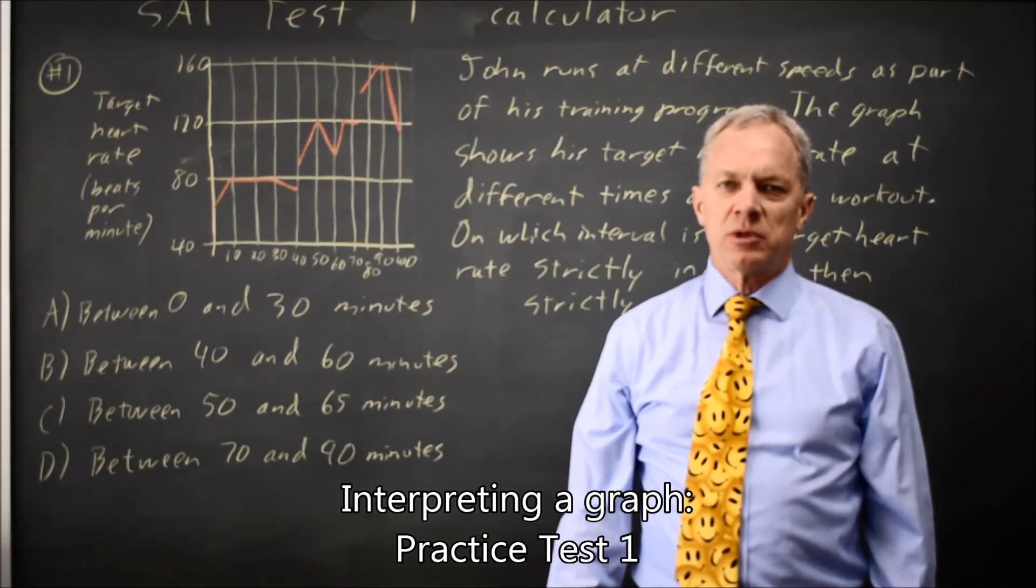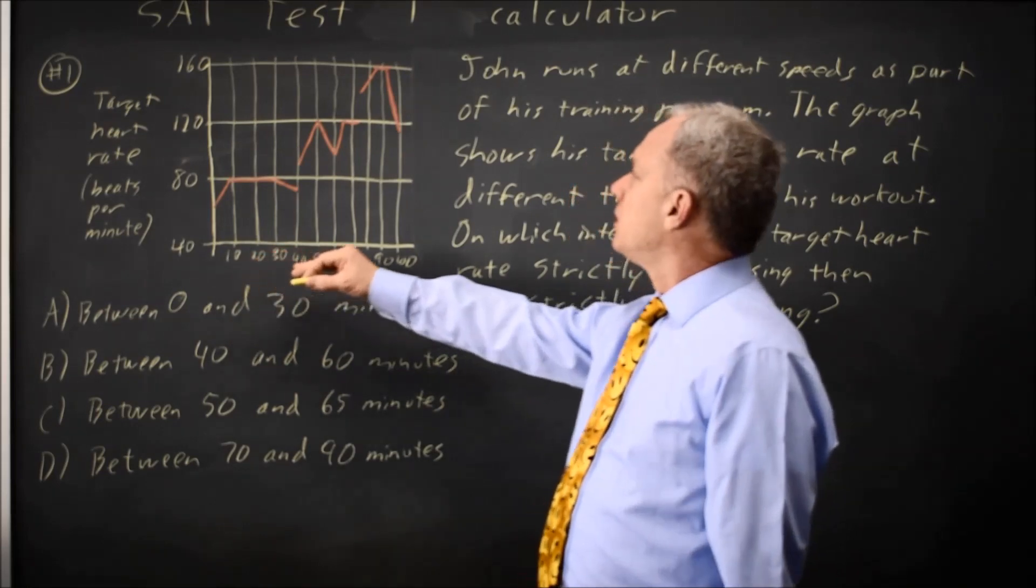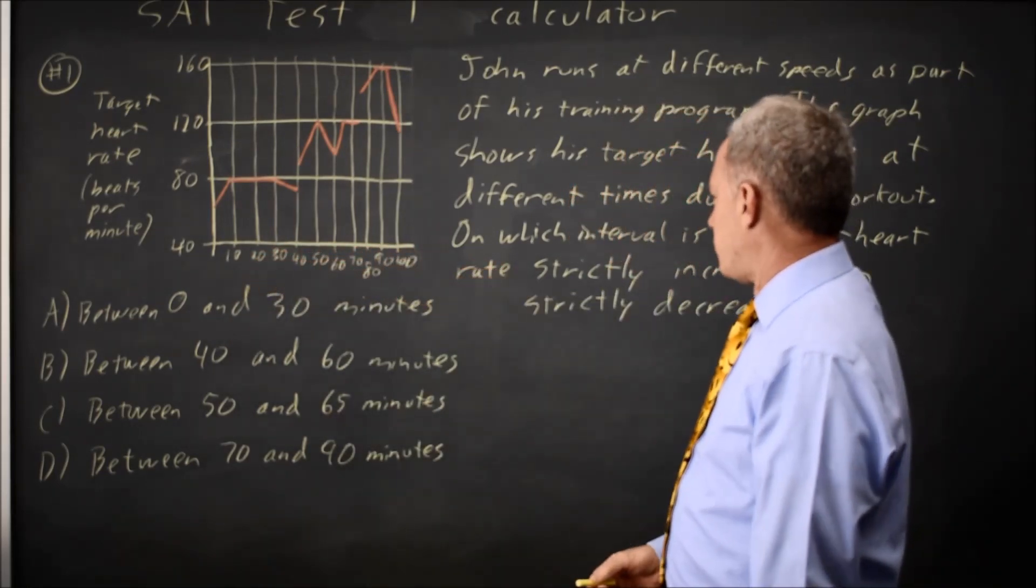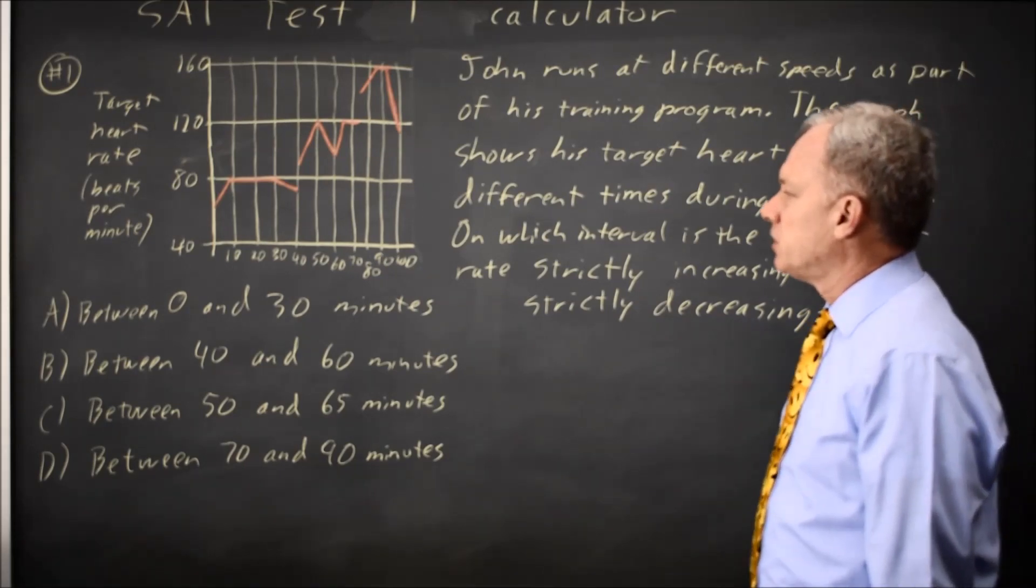This is calculated question number one from practice test one SAT. College Board gives us a graph and asks on which interval of those listed is the target heart rate strictly increasing and then strictly decreasing.